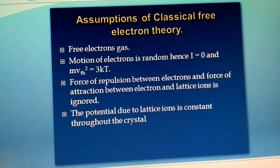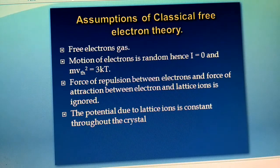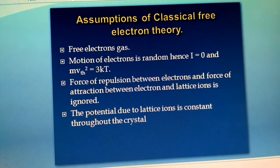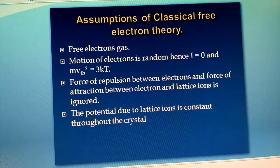The second assumption is that the motion of electrons is random, just like a real gas in a closed chamber. Due to the random motion, the current goes to zero, because we get current only when electrons are moving in a particular direction. In the absence of an electric field, the motion of electrons is random, hence we cannot expect current throughout the conductor.